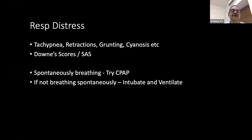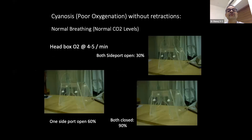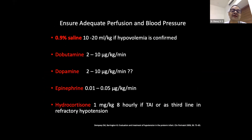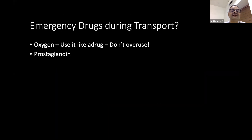If the baby does not have respiratory distress but has cyanosis, the baby likely has normal CO2 levels — you don't need CPAP, just use oxygen. As a guideline: head box with both side ports open gives about 30% oxygen, one port open gives 60%, both closed gives 90%. We don't want to use 100% oxygen unless compelled. Ensure adequate perfusion and blood pressure during stabilization and transport.